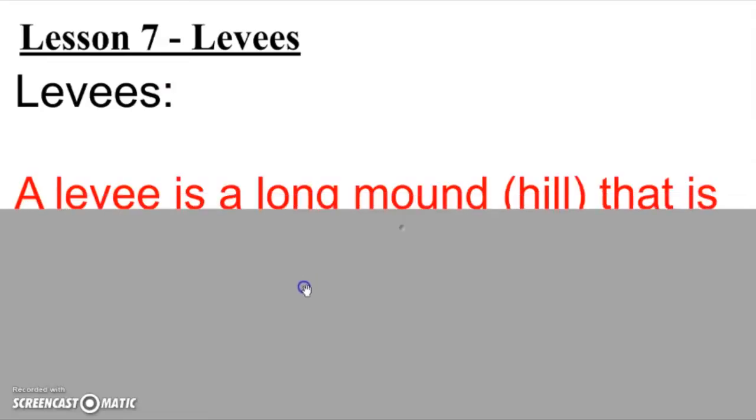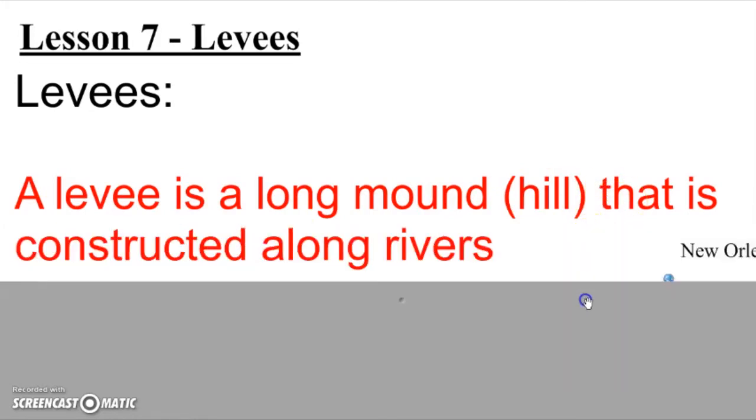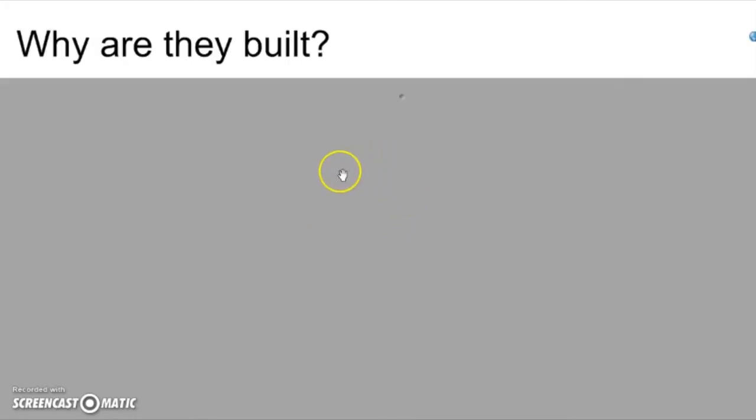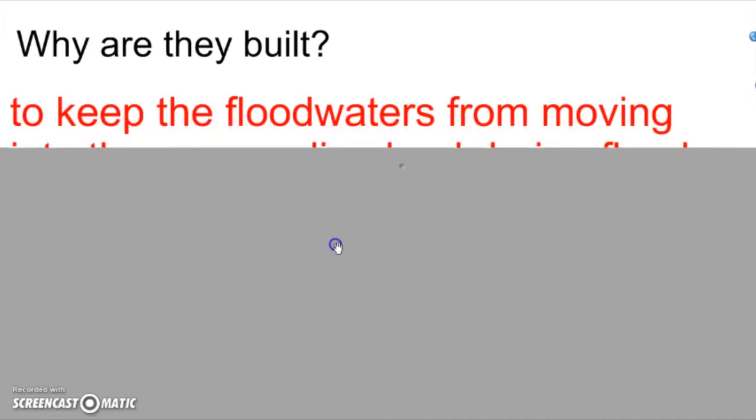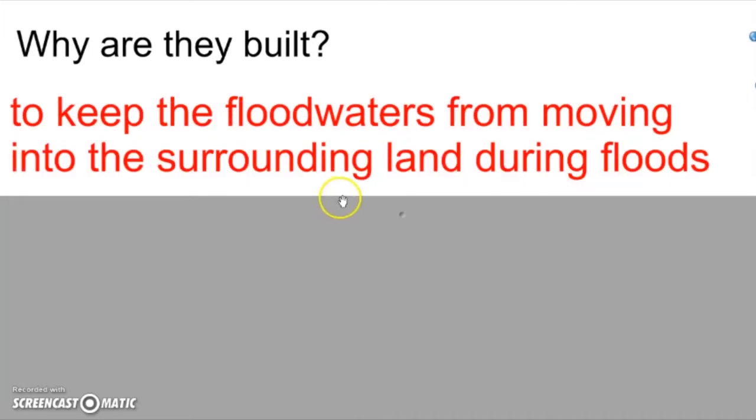So a levee is a long mound, kind of like a hill that is constructed along rivers. Why are they built? Well levees are built to keep the floodwaters from moving into the surrounding land during floods. So to keep a river contained, in other words.